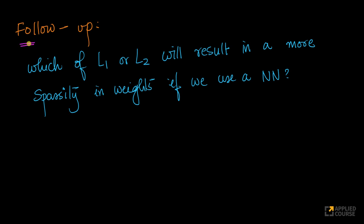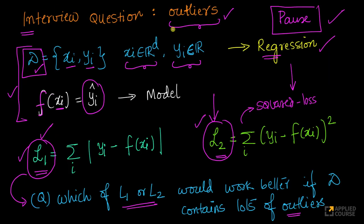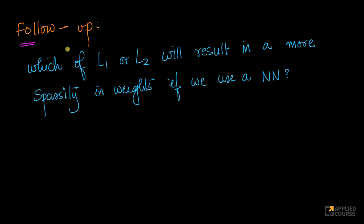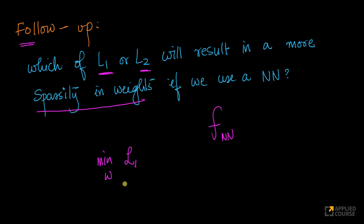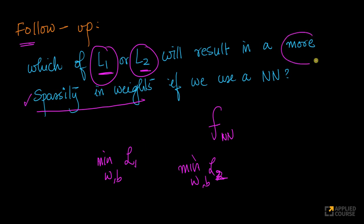Here is a quick follow-up question. To the same setup, in many interviews the interviewer extends the problem in multiple directions. The follow-up question is: which of L1 or L2 will result in more sparsity in weights, if your model f is a neural network with a bunch of weights? You can either minimize L1 loss or L2 loss — which will result in more sparsity in your weights? Please pause and think about this.